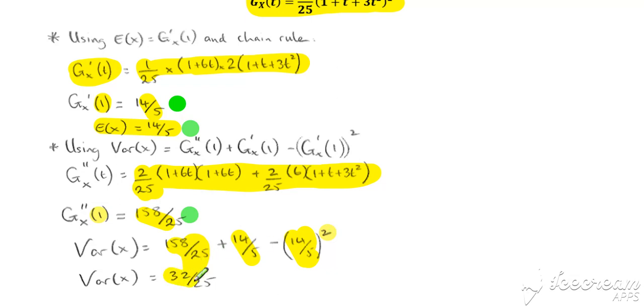Giving us a variance of 32/25. Okay, so similar to example one, but just the differentiation was a little bit more fiddly than in the first example.